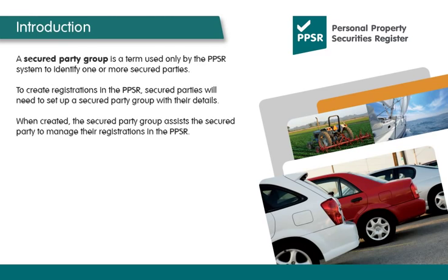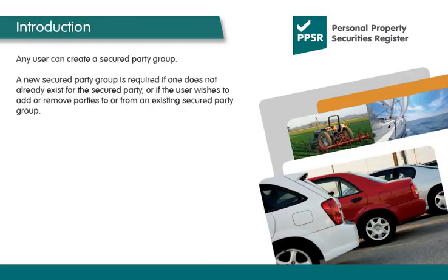A secured party group is a term used only by the PPSR system to identify one or more secured parties. To create registrations in the PPSR, secured parties will need to set up a secured party group with their details. When created, the secured party group assists the secured party to manage their registrations in the PPSR. Any user can create a secured party group. A new secured party group is required if one does not already exist for the secured party, or if the user wishes to add or remove parties to or from an existing secured party group.